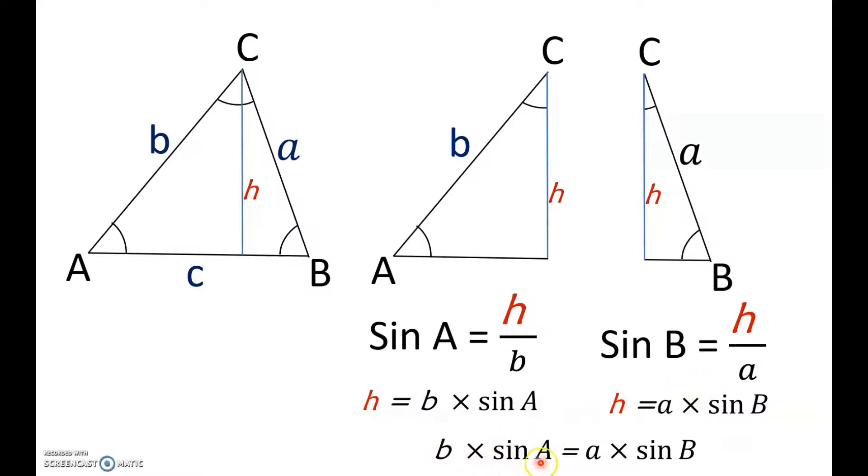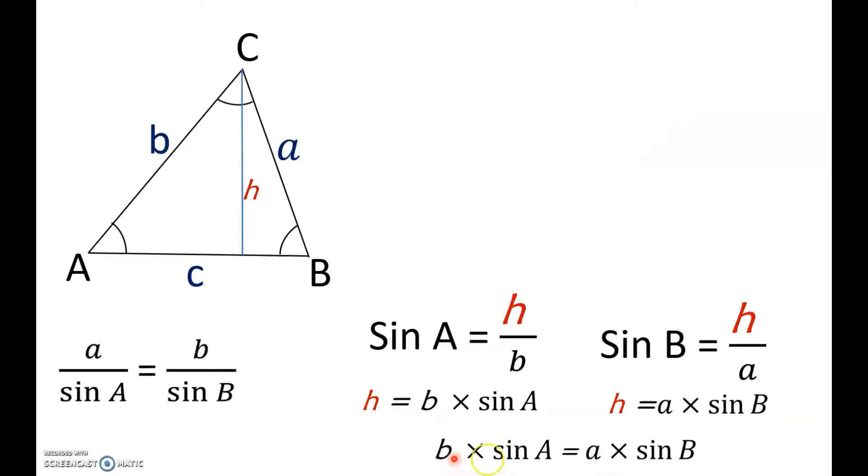We can see H is equal to B times sine A and H is equal to A times sine B. So, let's equate these two. We can say B times sine A is equal to A times sine B. Further simplifying this by bringing the sine to the other side, you can write it as A by sine A is equal to B by sine B. This is the sine rule. You can further extend the same method and you can find that it also equals to C by sine C.